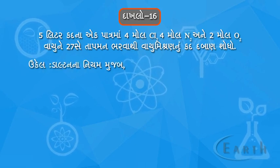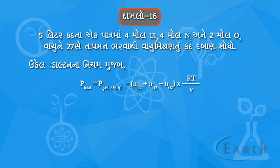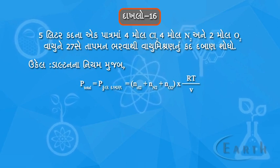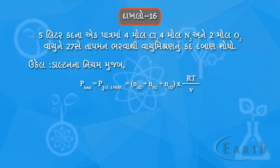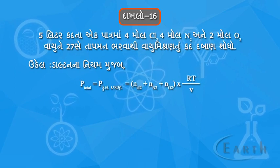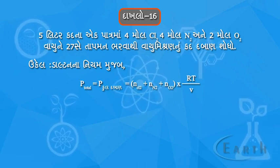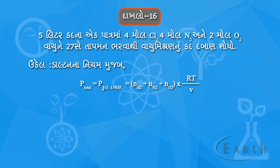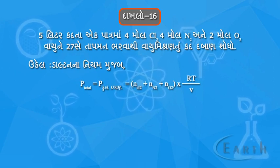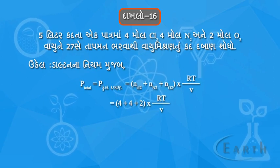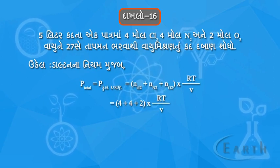Ukel. By Dalton's Law, P total (kool taban) is equal to (N_Cl2 + N_N2 + N_O2) × RT upon V, which equals (4 + 4 + 2) × RT upon V.